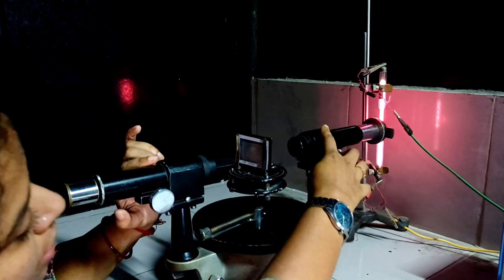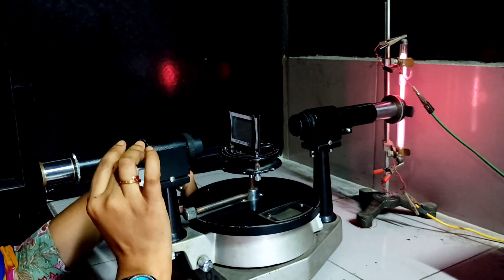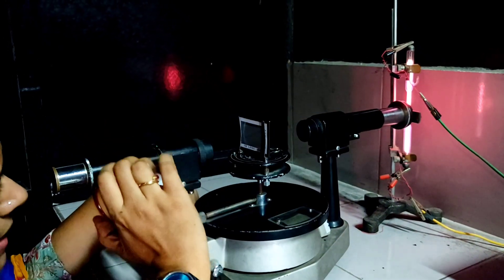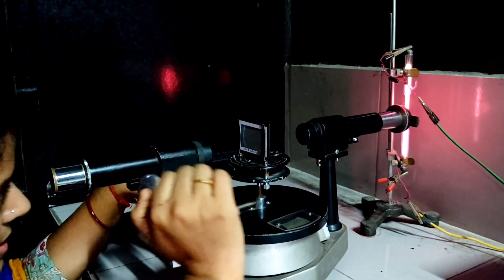The first step, collimator, diffraction grating and telescope all will be in same line, straight line. Then only we will be able to find direct image.